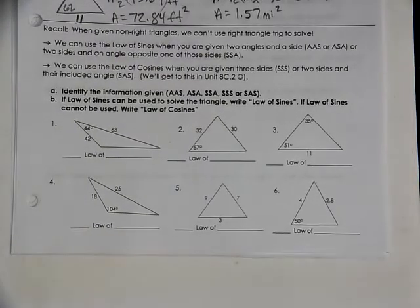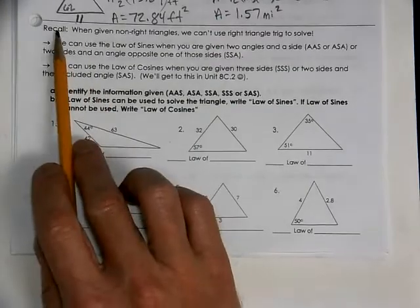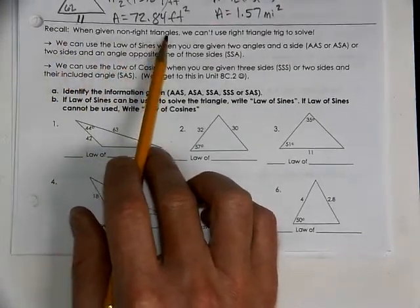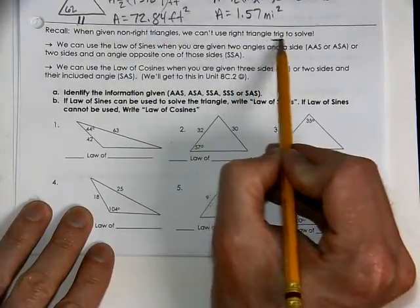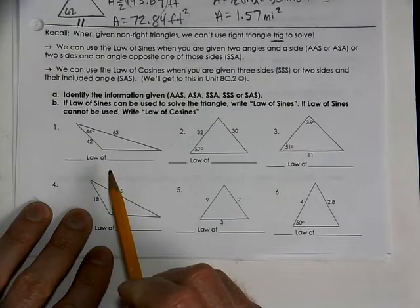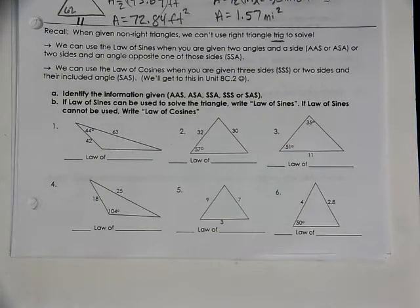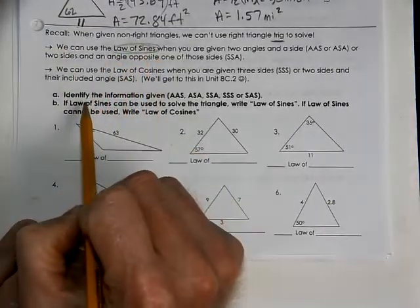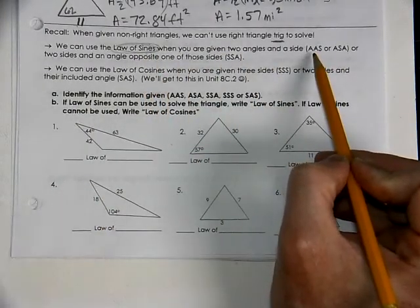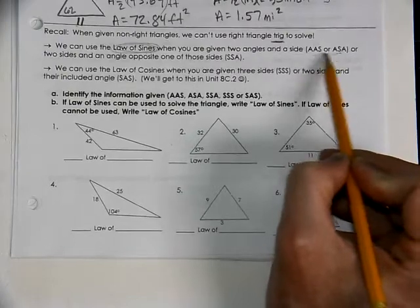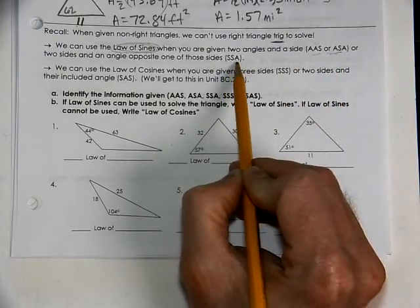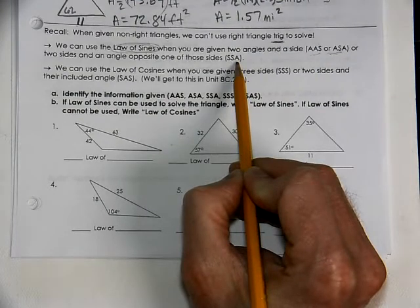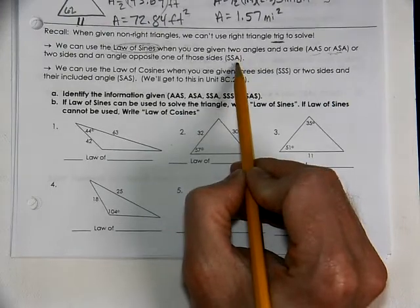In our next section, we're going to talk about which methods we use. When we're given non-right triangles, we cannot use right triangle trigonometry — which we typically call SOHCAHTOA. You can't use SOHCAHTOA if you don't have a right angle. But we can use what's called the law of sines. We use law of sines when we're given information in the AAS or ASA situation, or even SSA — two sides and the non-included angle.